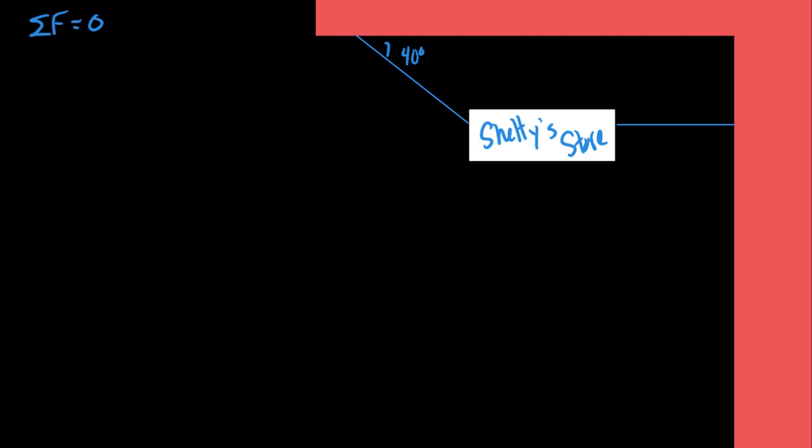Start from here. Any object that has mass is given its own diagram. How many objects do we have here? Just one — it's the sign. I asked you to analyze the sign, so the sign gets a dot indicating its mass. We remove the extension from the object and focus on just this as the mass of the object. Later we'll worry about its shape, but right now we deal with just the center of mass of the object.